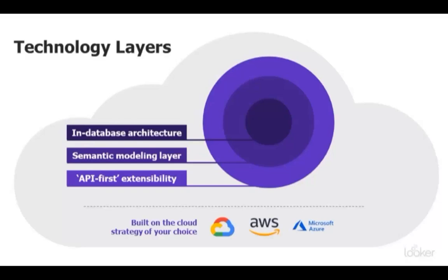Instead, we query the database in real time so data is always accurate and always fresh. This changes the way people are moving data into the database — shifting ETL to focus more on transforming data at the time of query and less on in-flight transformation into the warehouse. This paradigm is supported by the next concentric circle: our version-controlled semantic modeling layer that acts as a centralized definition for all of your business rules and business logic. We're separating business logic from physical data, which allows you to reliably apply consistent definitions across KPIs, so both technical and non-technical users can work with trusted data.